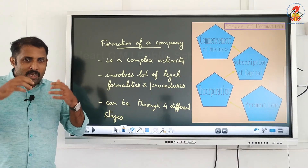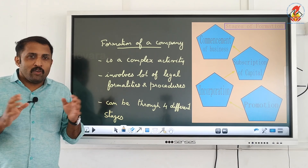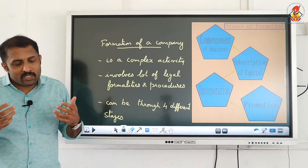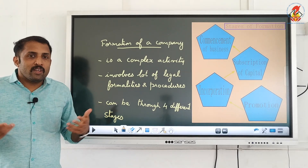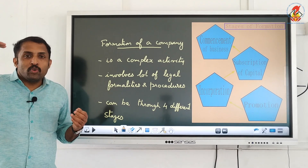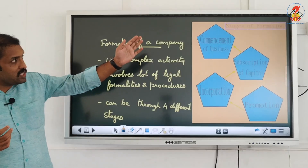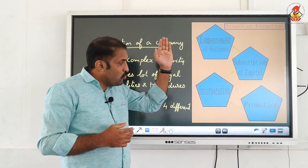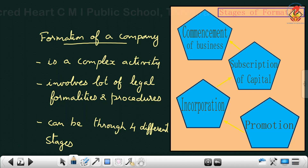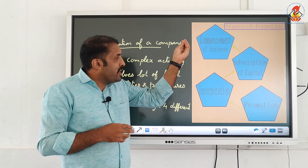Just as a child growing up passes through different stages — lying down, then standing, walking, and running — the formation of a company similarly goes through different stages. The formation of a company carries through four stages: promotion, incorporation, subscription of capital, and commencement of business.